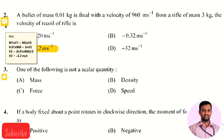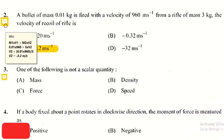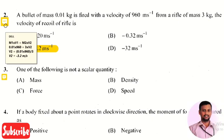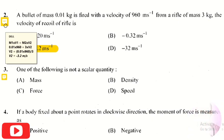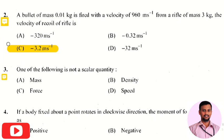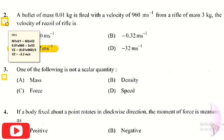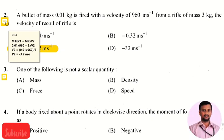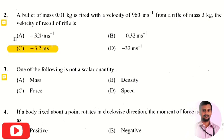To solve this, we equate the momentum of both the bullet and the rifle: M₁V₁ = M₂V₂, where M₁ is the mass of the bullet, V₁ is the velocity of the bullet, M₂ is the mass of the rifle, and V₂ is the recoil velocity we need to find. Substituting all values gives V₂ = −3.2 m/s. The negative sign indicates the rifle moves in the backward direction.